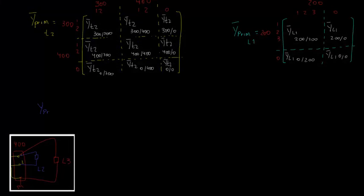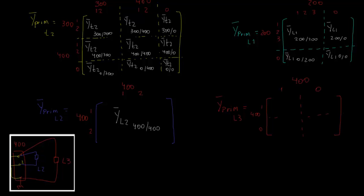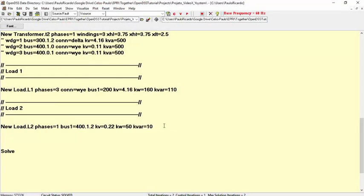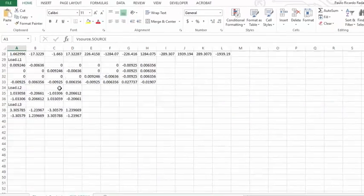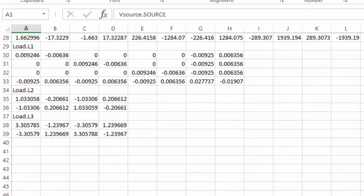Finally, the loads L2 and L3 are both connected to bus 400, with L2 being connected to nodes 1 and 2, and L3 connected to nodes 1 and the reference. Keeping the same notation we have been adopting, Y-primitive L2 will be named as Y L2 400/400, and Y-prim L3 will be broken into four sub-matrices, because we are trying to keep the admittances related to the reference in separate sub-matrices. Let's define these loads in OpenDSS. As you can see, the Y-primitive matrices of the two loads are 2x2, as expected.